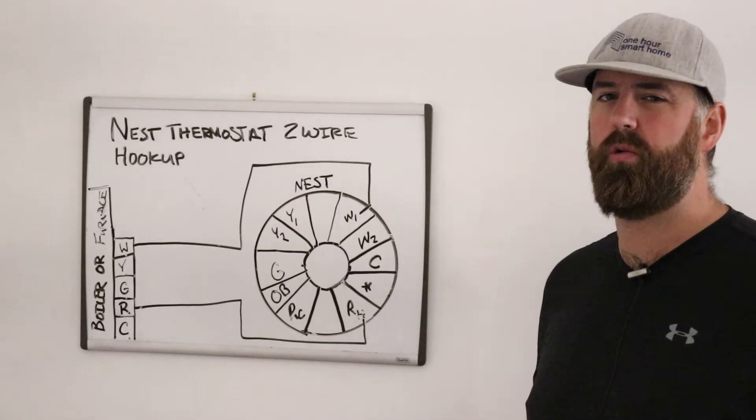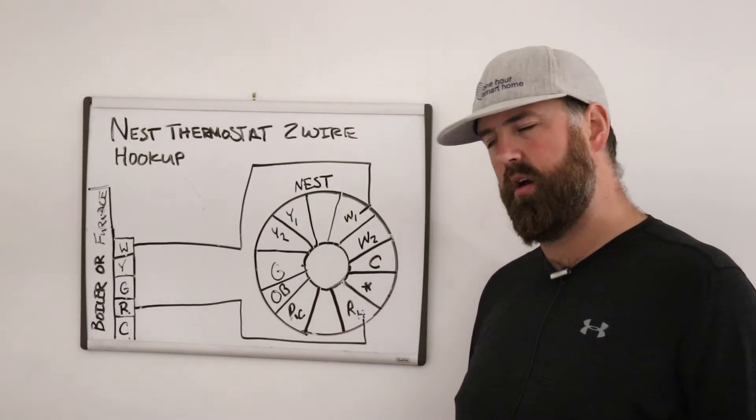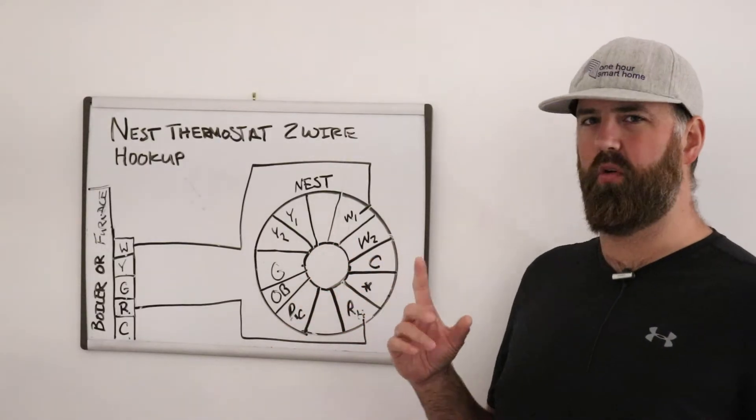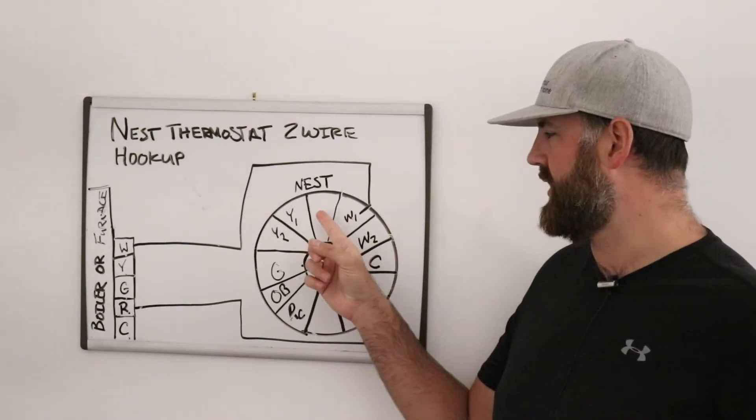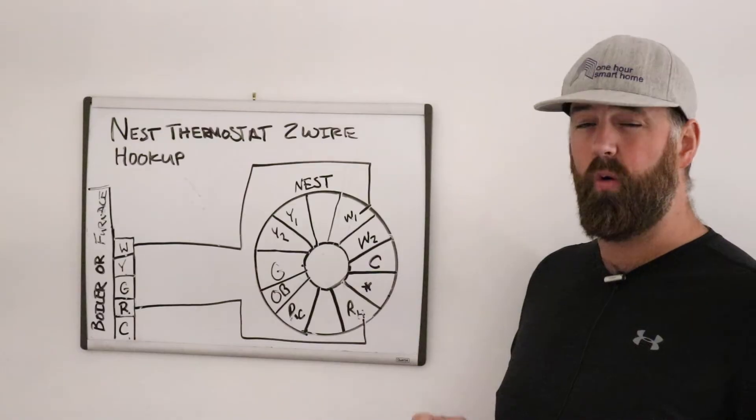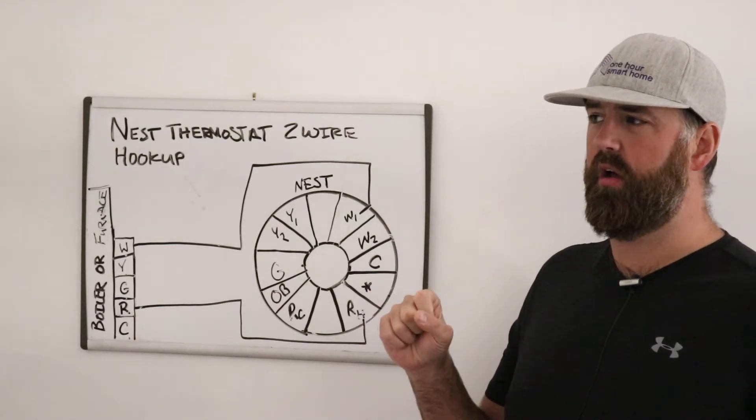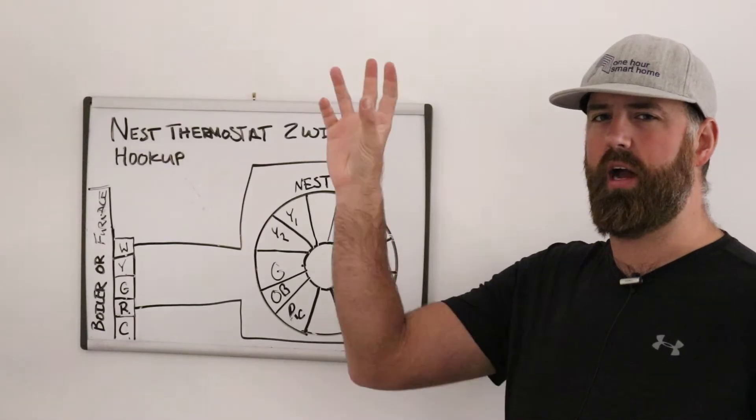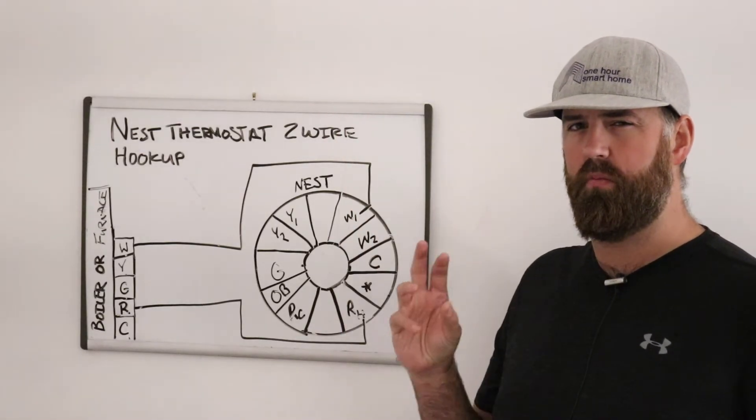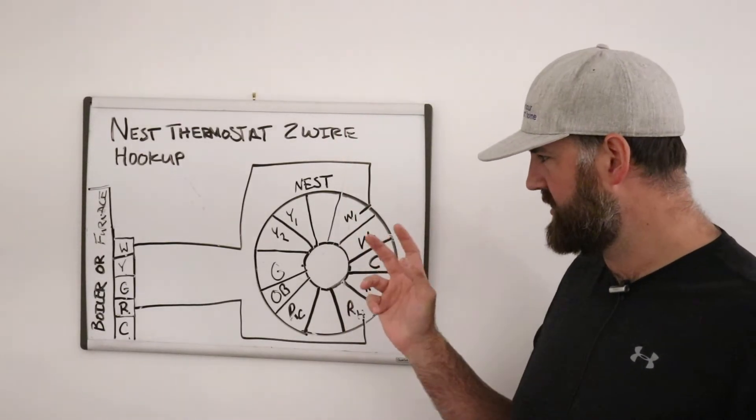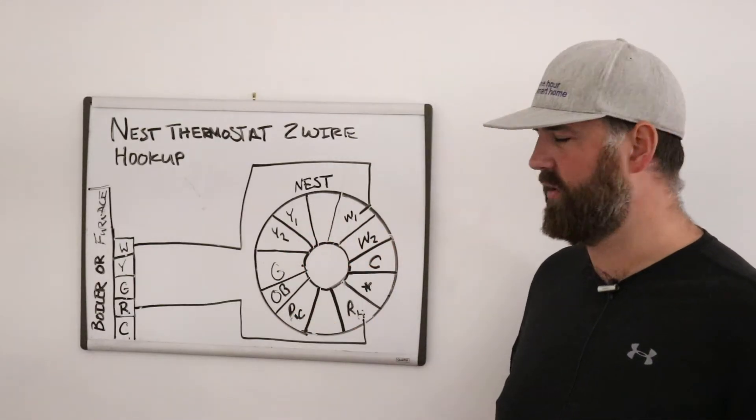Y1, that is cooling. That is a call for air conditioning. Y1 is if you only have single stage cooling you are only going to have one wire there. Y2 is if you have two stage cooling. So that means that you have a second higher stage of cooling. It delivers more cool air faster. It's basically just two speeds for your cooling.